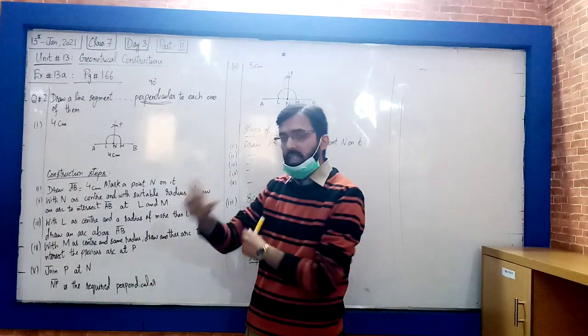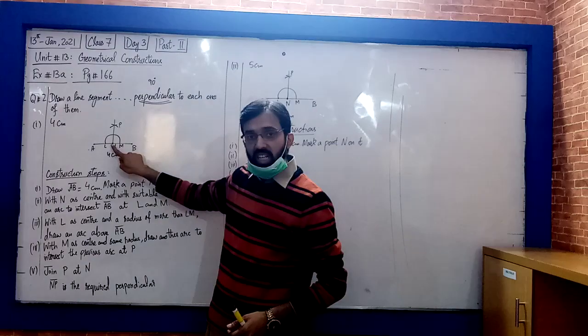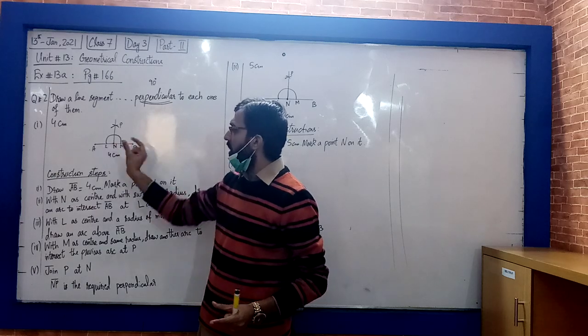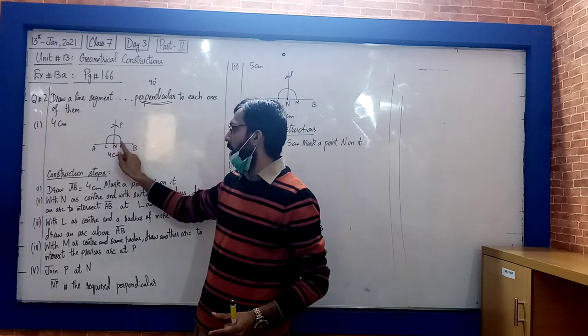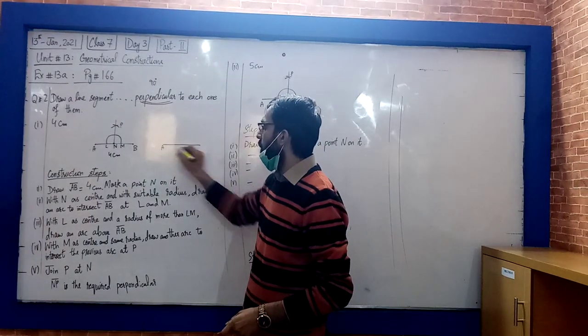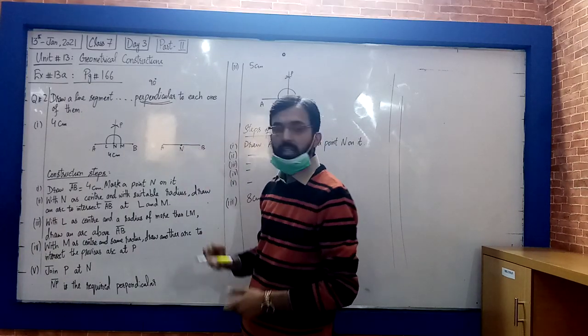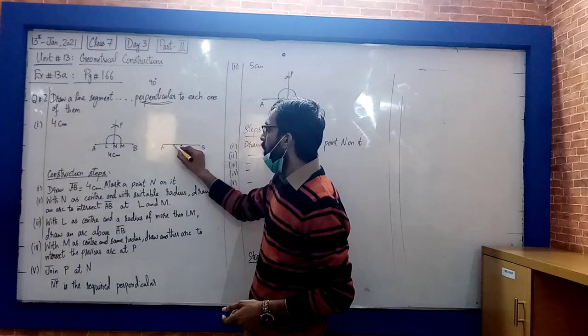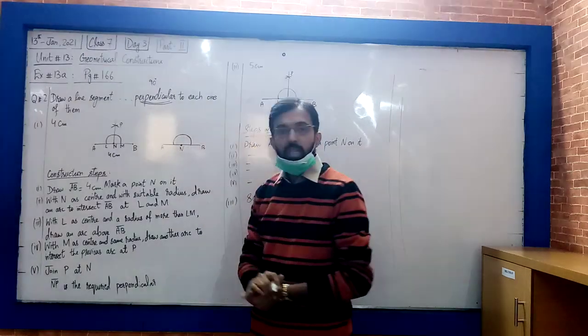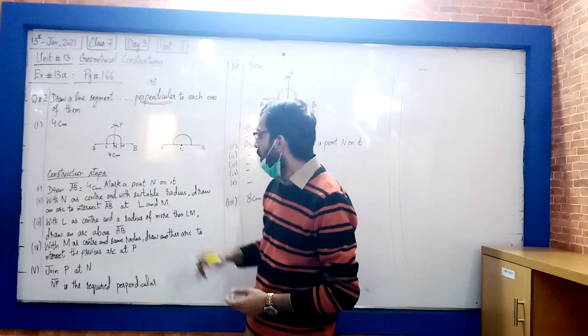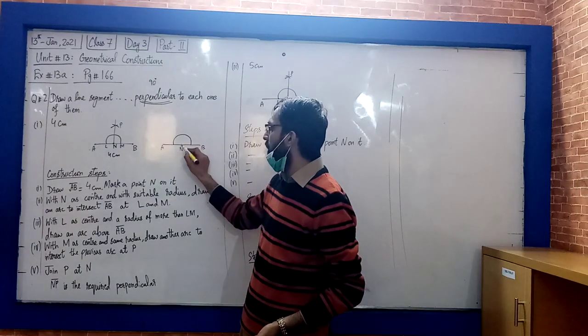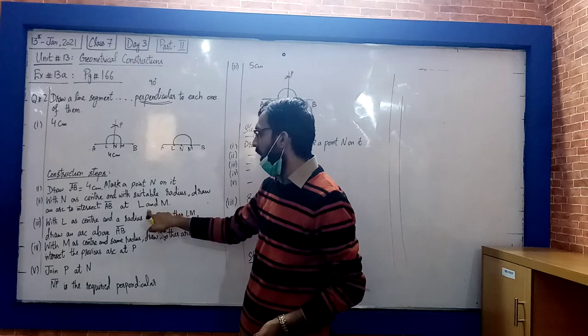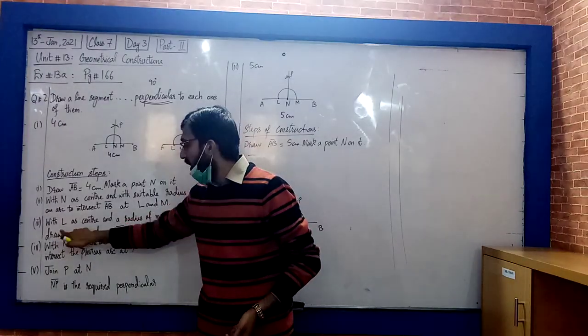What do we do? Adjust the compass and with AB open, you can expand the compass. Choose N as center, expand the compass and draw a semi-circular arc to intersect AB.